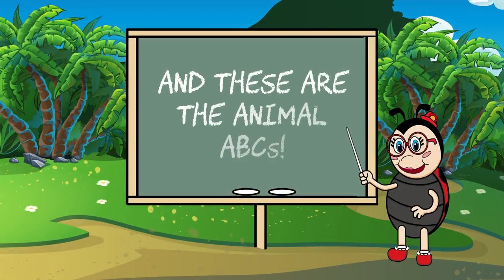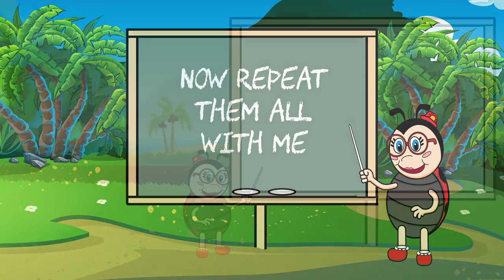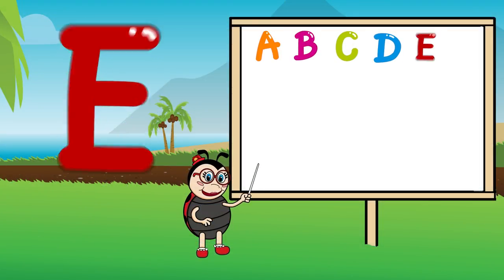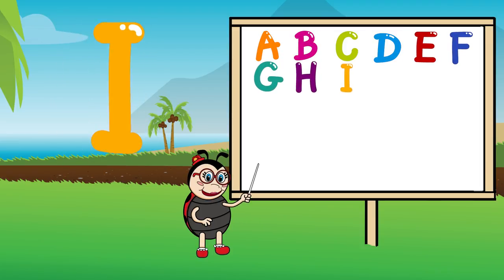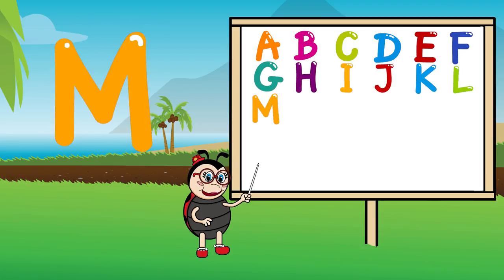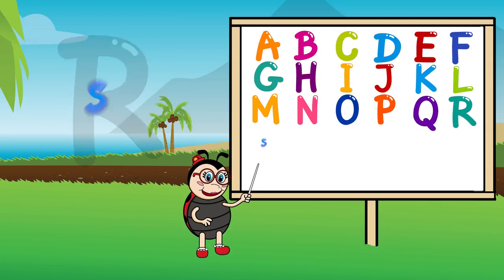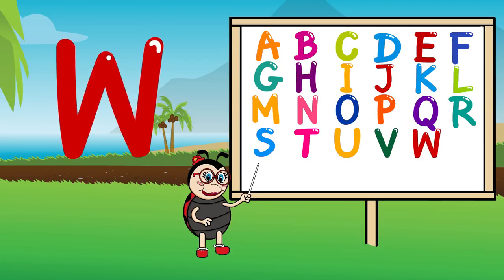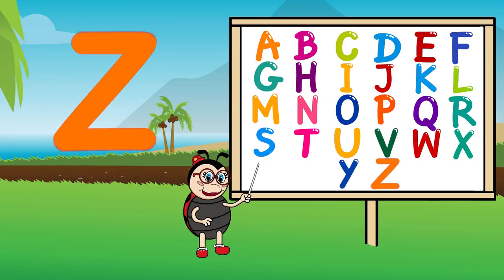And these are the animal ABCs. Now repeat them all with me. A, b, c, d, e, f, g. H, i, j, k, l, m, n, o, p. Q, r, s, t, u, v. W, x, y, and z.